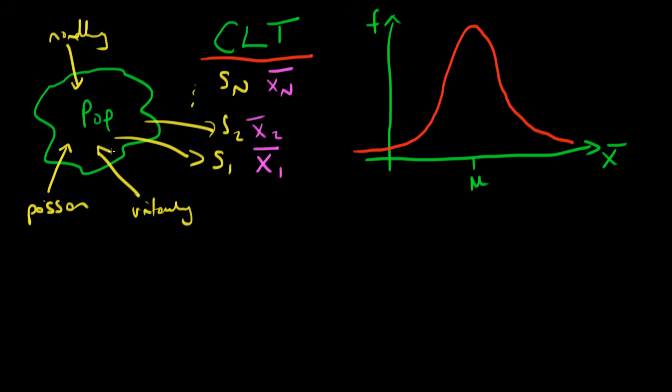So it's completely unrestricted in terms of the original population distribution. If I am taking a random sample of observations from that population, then independent of that population distribution, my sample mean is going to follow some sort of normal distribution — as shown on the right — under the assumption that I've taken a large number of samples.